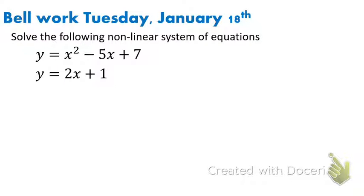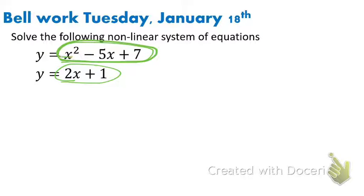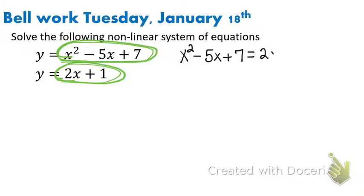The first thing you want to do is set them equal to each other, so we're going to use substitution. Set this equal to two x plus one. When we do that, we get x squared minus five x plus seven equals two x plus one. Now we need to set it equal to zero, so we're going to subtract that two x and subtract the one, because it's a quadratic.